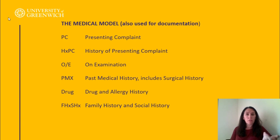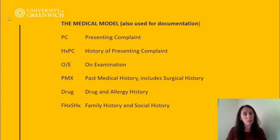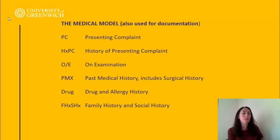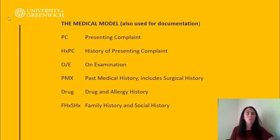Social history: do you smoke, do you drink, what do you do for work — heavy lifting? Do you work out? What do you eat? You can ask these questions in a more polite manner, but I'm trying to get at whether there are any risk factors leading up to this episode. Social history is also pretty important when thinking about safeguarding — who do you live with?